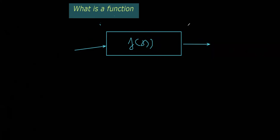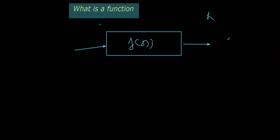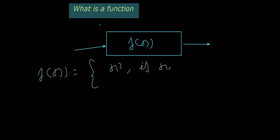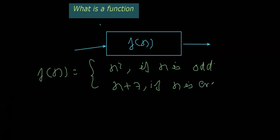The most usual way of denoting a function is f(x), but we also use other variables like h(x), g(x), r(x), etc. Now let's say I define a function f(x) as x squared when x is odd, and x plus 7 when x is even.